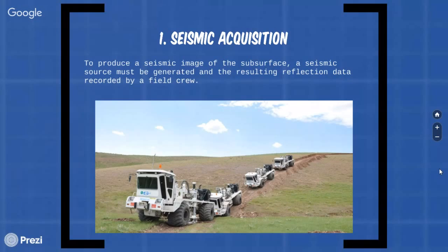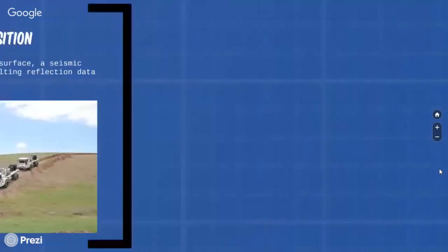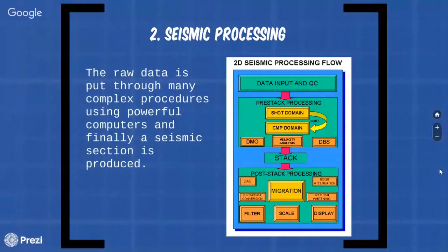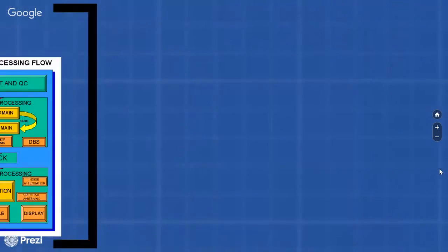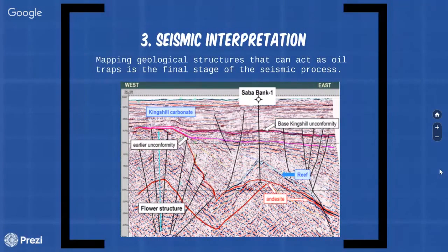Second one is seismic processing. Next, the data must be processed, where the raw data is put through many complex procedures using powerful computers and finally a seismic section is produced. The last one is seismic interpretation. Making sense of the seismic image, identifying and mapping geological structures that can act as oil traps is the final stage of the seismic process.